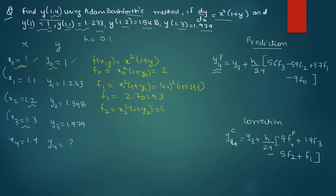Then your f2 will be x2 squared (1 plus y2), that means your x2 is 1.2 (1 plus y2 is 1.548). When you solve this it will come out as 3.66912.